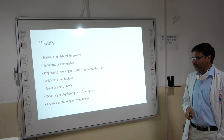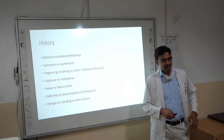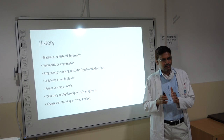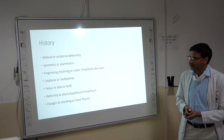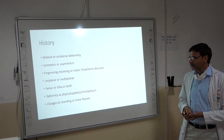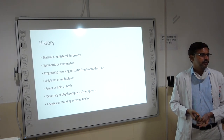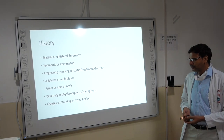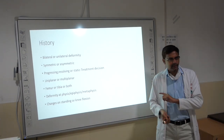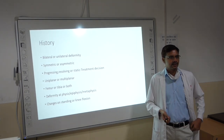The next point is whether the deformity is uniplanar or multiplanar — whether there is only genu valgum or varum, or if there is associated anticurvatum, recurvatum, or torsional deformities. You should also know whether the deformity is in the femur, the tibia, or both bones equally or unequally involved. From history it is difficult, but you should know whether the deformity is at the physis, epiphysis, or metaphysis — which we will determine mainly from examination and X-ray.